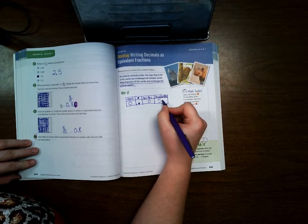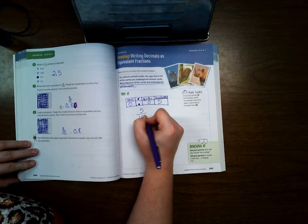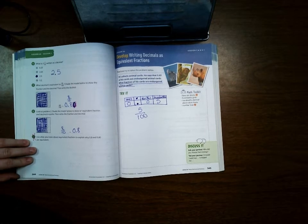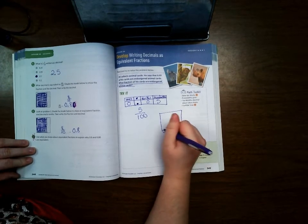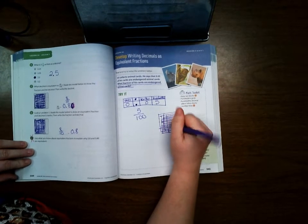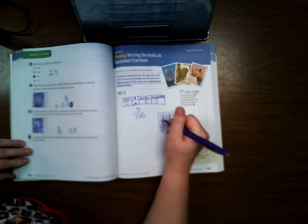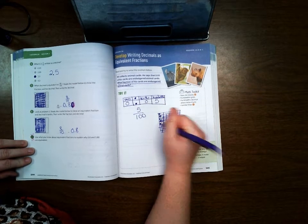Since this says five hundredths, that means there's five one-hundredths. You can also use a fraction model that has the hundred squares, and you would literally just shade five of them.